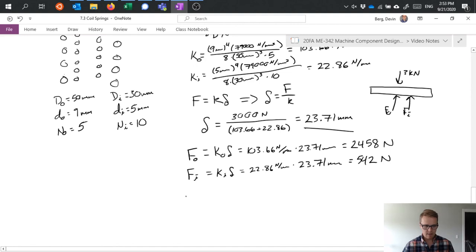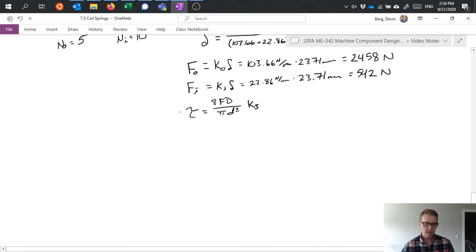And that is tau equals 8FD over pi d cubed times some K value, a different K than what we were just talking about. This is the correction factor because of the torsional stress. And we're using the static form for that that we talked about before, rather than the dynamic, because we're assuming the load is just applied statically. And therefore we can substitute what we know into that equation in order to solve.